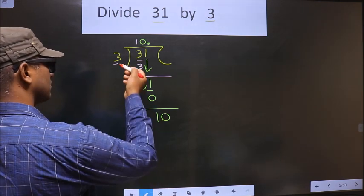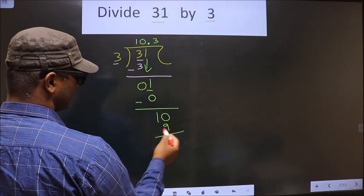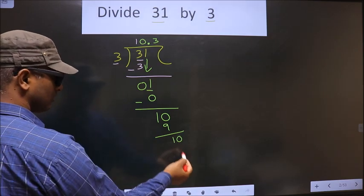Now here we have 10. A number close to 10 in 3 table is 3, 3 is 9. So 10 minus 9 is 1 and then division goes on.